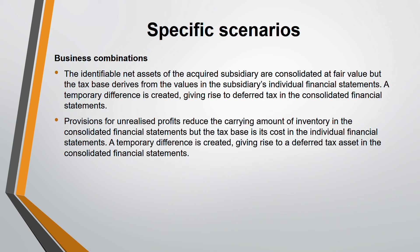Another business combination scenario is the provision for unrealized profit (PURP) from intra-group sales. On consolidation, the unrealized profit is eliminated, so the carrying amount of inventory goes down. However, for the tax base, the cost from the individual financial statement is used and the unrealized profit is not eliminated. Because the tax base is now more than the carrying amount of inventory, this creates a deferred tax asset.